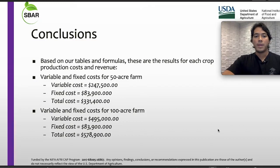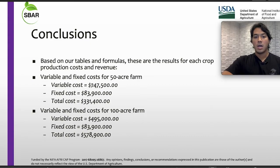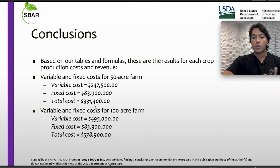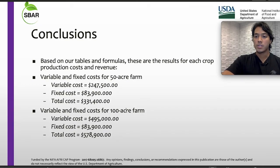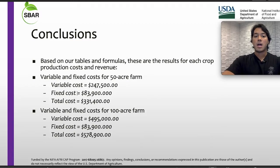Now that we're done, these are our conclusions. Based on our tables and formulas, for the 50-acre case: variable cost is $247,500, fixed cost is $83,900, giving us a total cost for that farm range. For the 100-acre farm, the variable cost increases because we are increasing our units. The fixed cost — it's the same. And the total cost, of course, increases. The difference is noticed in the variable cost and total cost, but the fixed cost does not change.